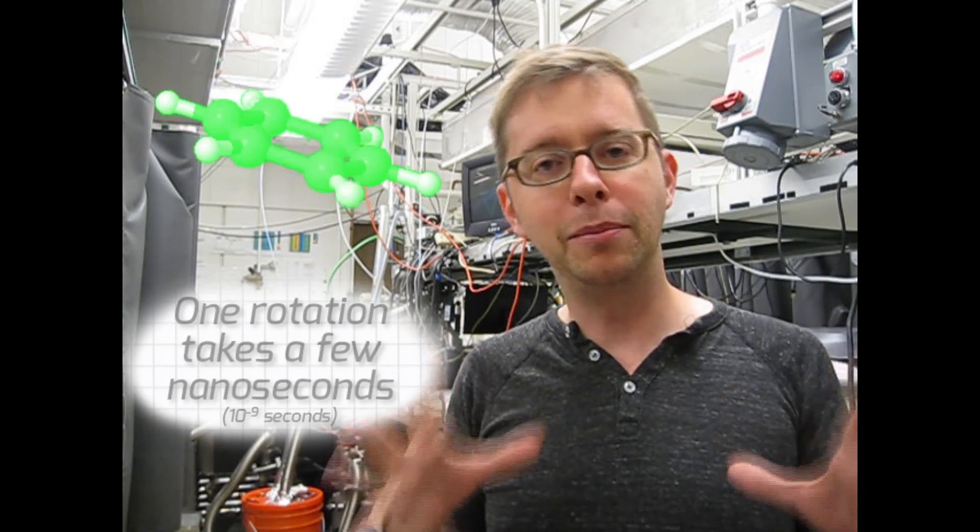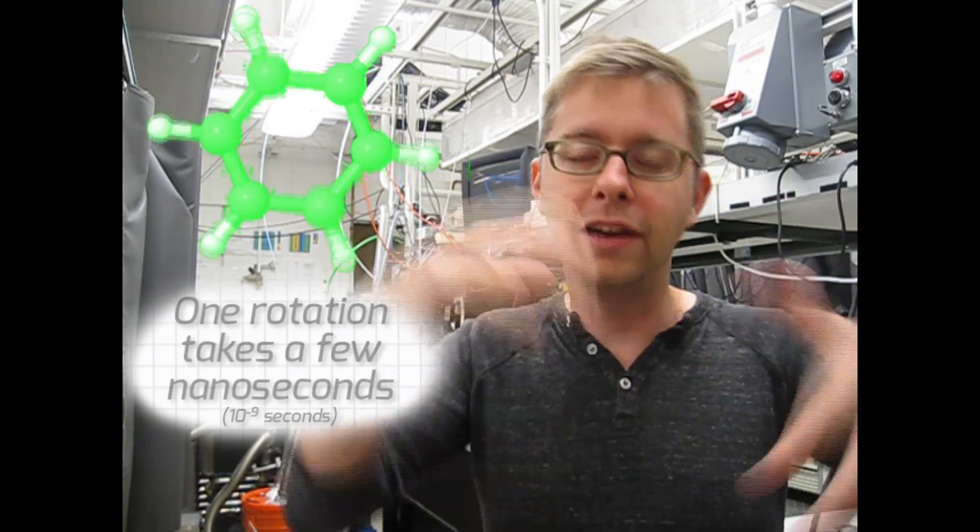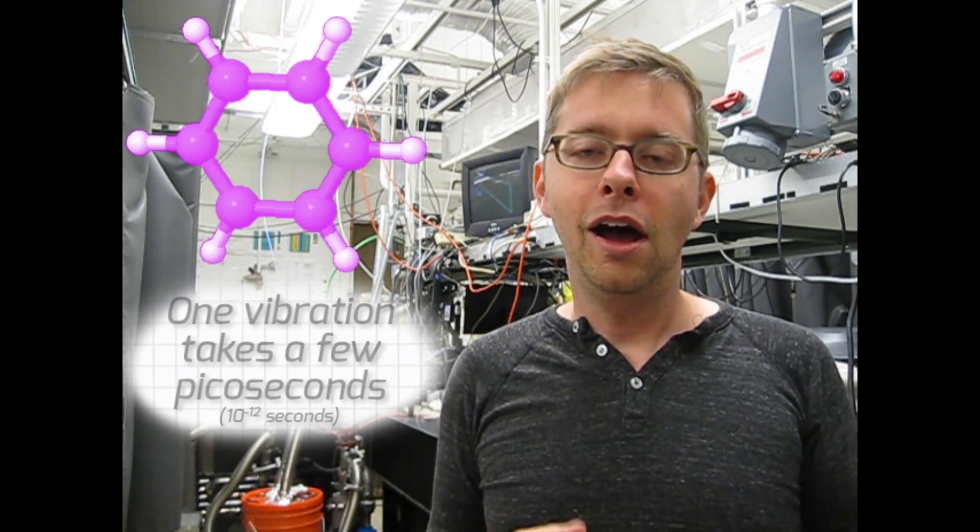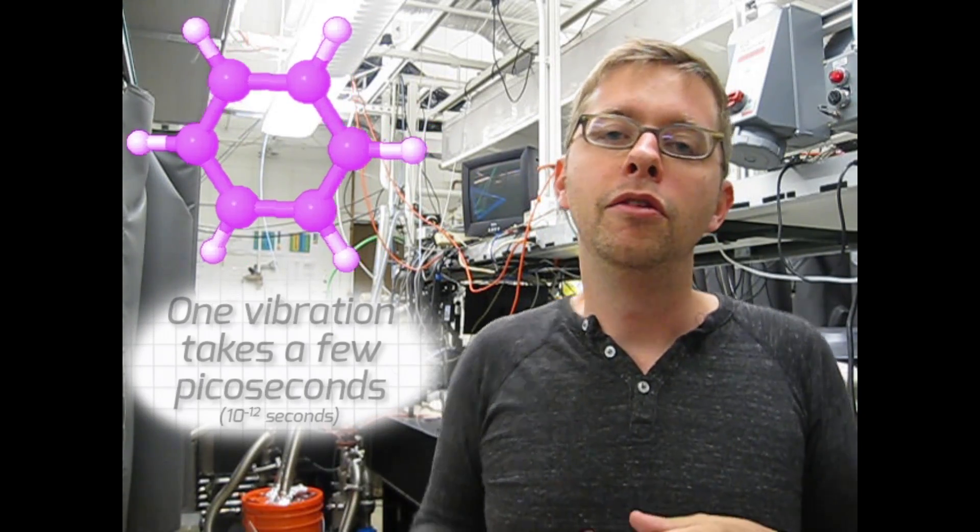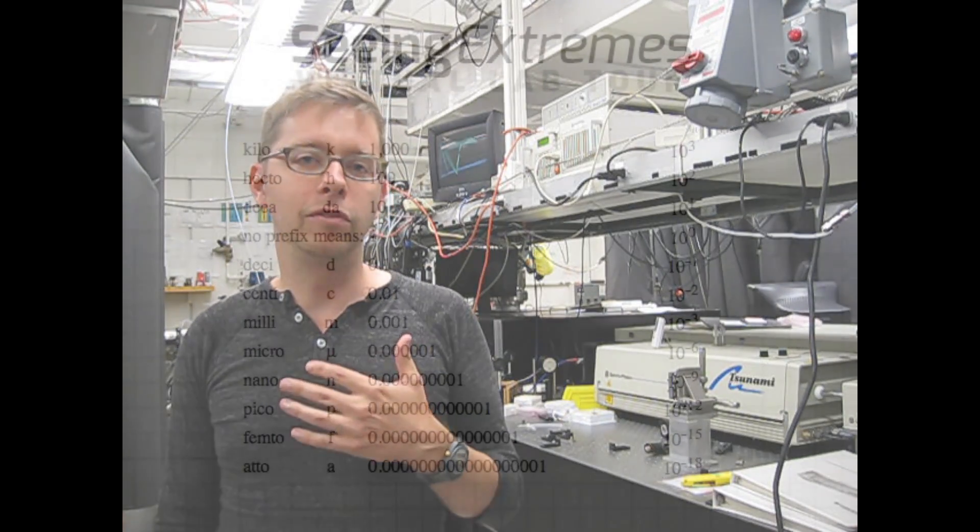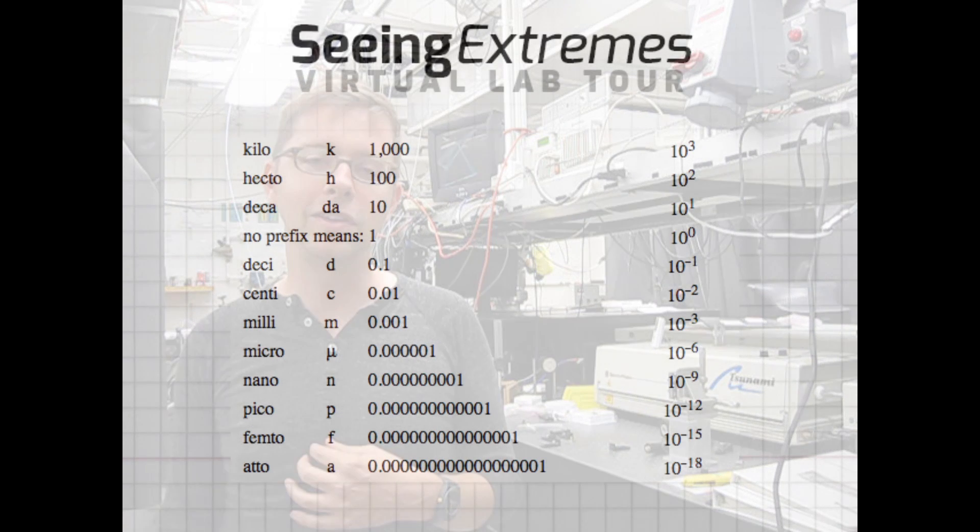Different things that are of different sizes move on different timescales. So for instance, if you had a big molecule and it was rotating around in space, that happens on the nanosecond timescale. A molecule that's vibrating, those vibrations occur on the picosecond timescale. So these would be on timescales of about 10 to the minus 12 seconds into 10 to the minus 14 or 15 seconds.